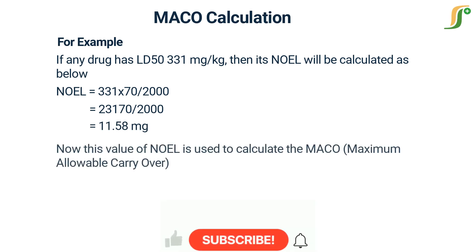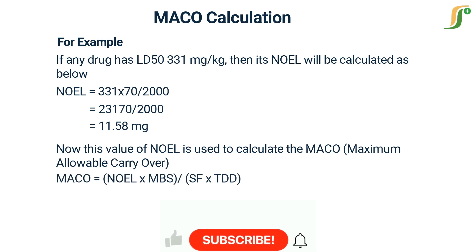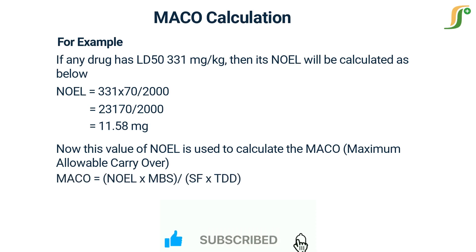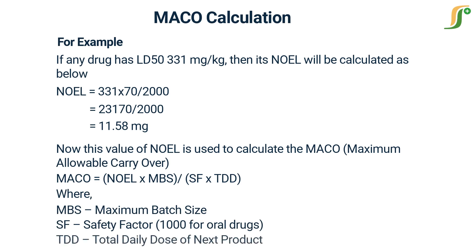This value of NOEL is then used to calculate the MACO — Maximum Allowable Carry Over. The formula is: MACO = (NOEL × MBS) / (SF × TDD), where MBS is the Maximum Batch Size, SF is the Safety Factor (1000 for oral drugs), and TDD is the Total Daily Dose of the next product.